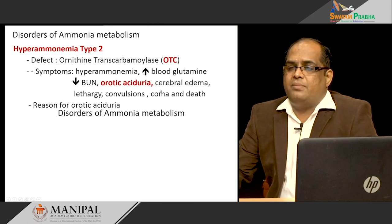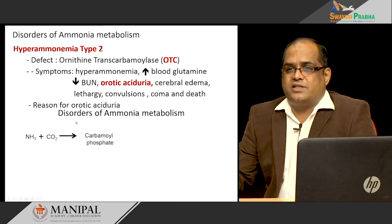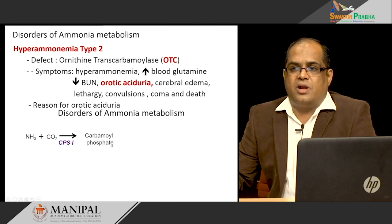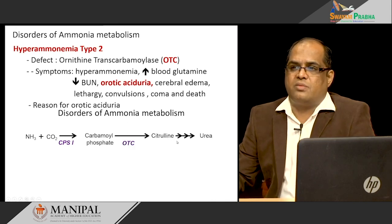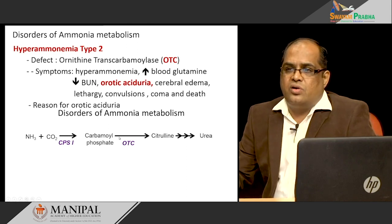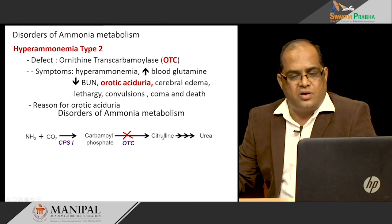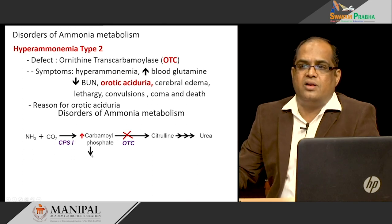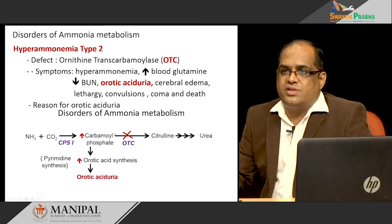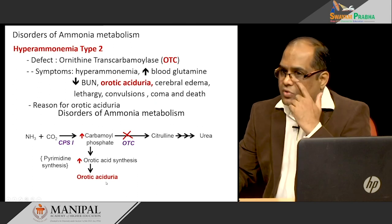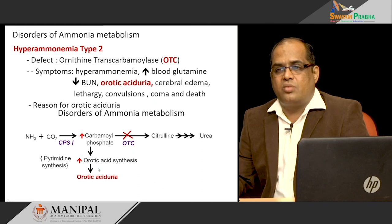The first two reactions occurring in the mitochondria are more severe compared to downstream enzyme deficiencies, because some citrulline formed can carry nitrogen for excretion. Hyperammonemia types 1 and 2 are very important, with type 2 being the most common. In type 2, ornithine transcarbamylase deficiency causes increased ammonia, increased glutamine, decreased blood urea nitrogen, and orotic aciduria, since accumulated carbamyl phosphate spills into pyrimidine synthesis. Orotic aciduria is the distinguishing feature: present in type 2, absent in type 1.